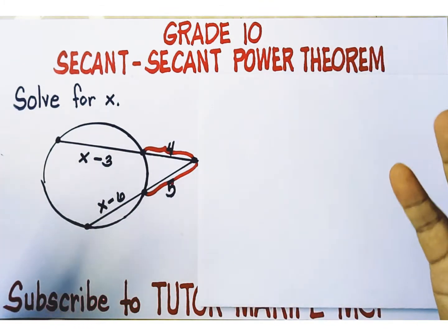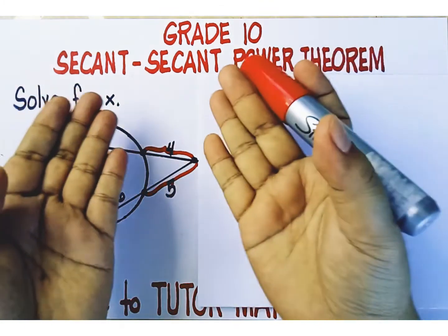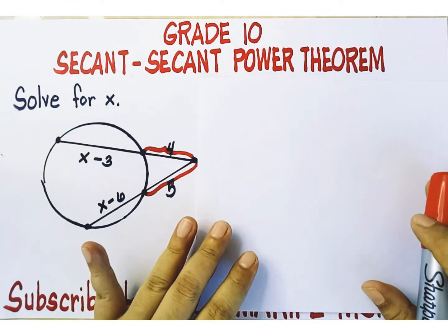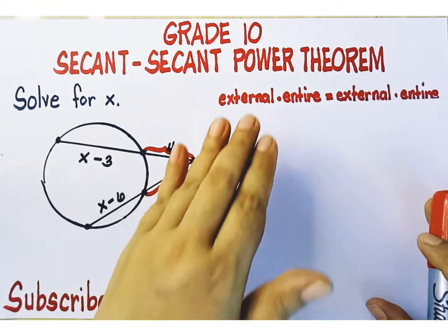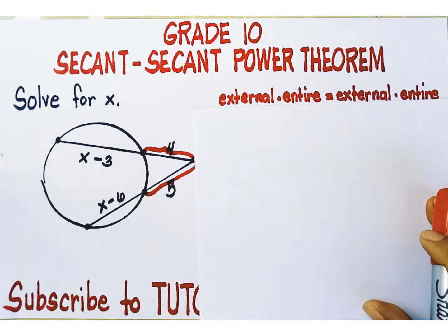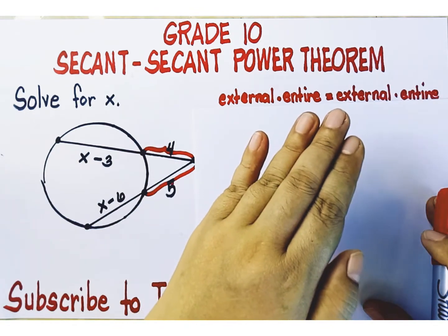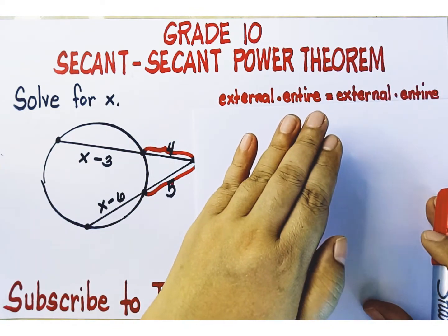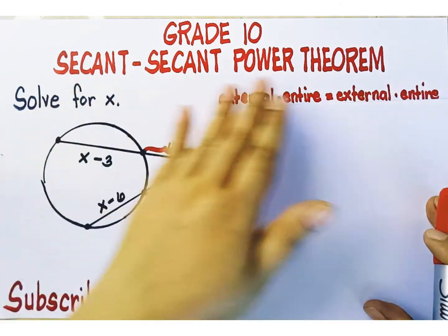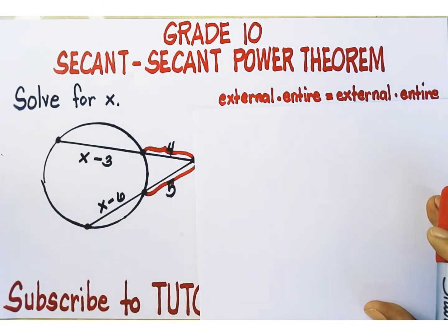In other words, in forming our equation by application of the secant-secant power theorem, we follow the pattern: external times entire equals external times entire. Following this pattern is simpler and easier to remember than the lengthy statement of the secant-secant power theorem.